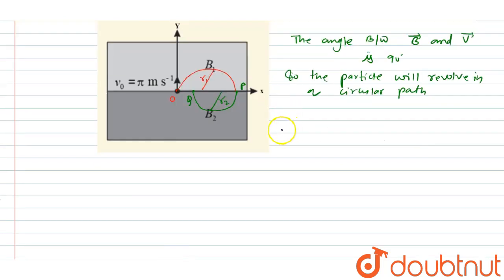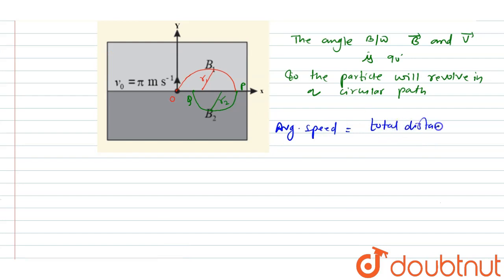We know that average speed equals total distance covered divided by total time taken.